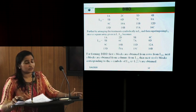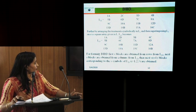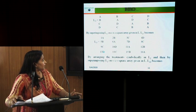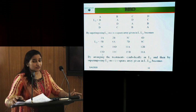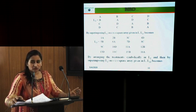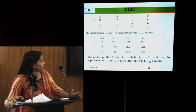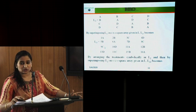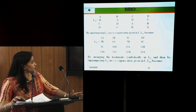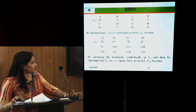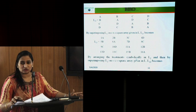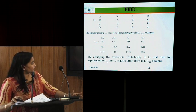To construct BIBD blocks from the Latin squares: the first S blocks come from rows of the first Latin square — block 1: {1,2,3,4}, block 2: {5,6,7,8}, block 3: {9,10,11,12}, block 4: {13,14,15,16}. The next S blocks come from columns — block 5: {1,5,9,13}, block 6: {2,6,10,14}, block 7: {3,7,11,15}, block 8: {4,8,12,16}.